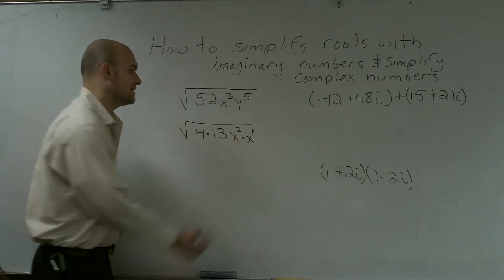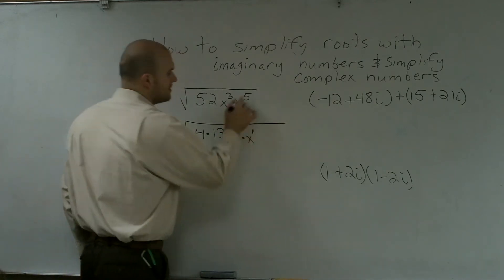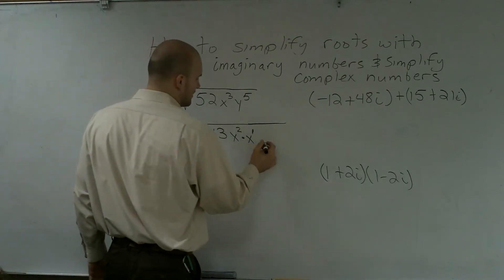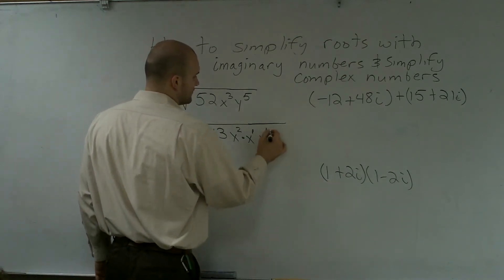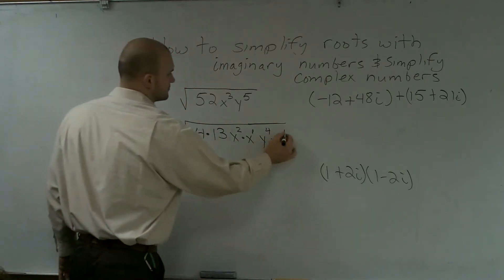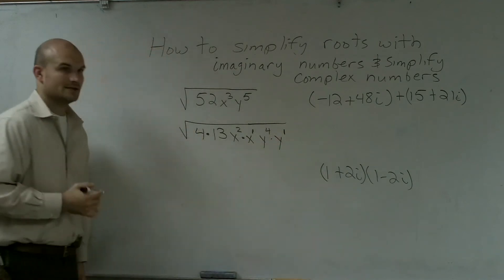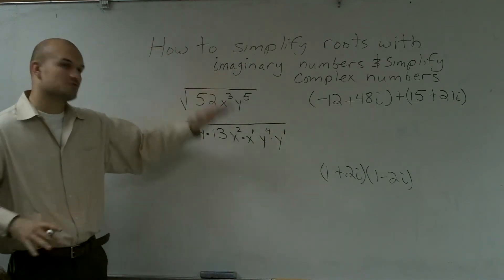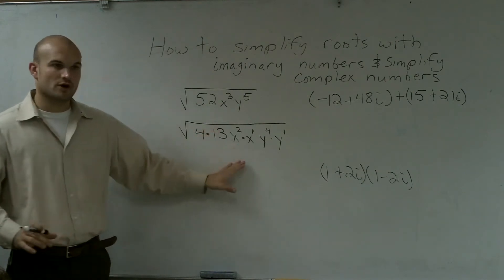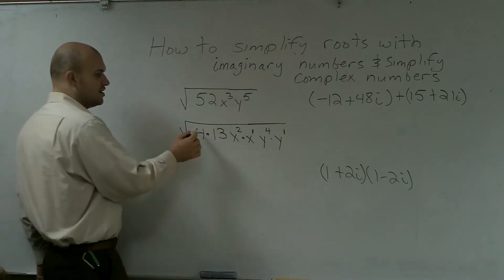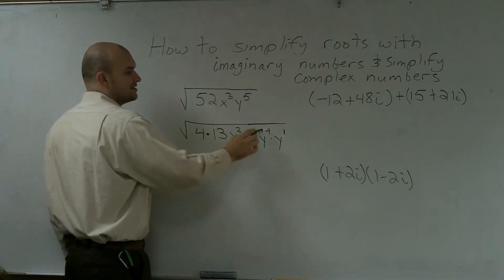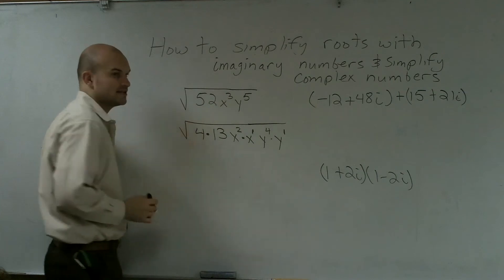Because I know when I multiply exponents with different powers, you're actually adding the exponents together. And my y to the fourth can be represented as y to the fourth times y to the first power. So all I did was I just rewrote the problem. I have not changed anything mathematically. All I did was rewrote it. If I was to multiply these back again, 4 times 13 is 52. x squared times x to the first is x to the third. y to the fourth times y to the first is y to the fifth.